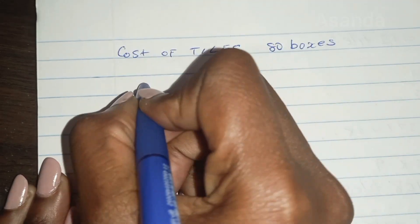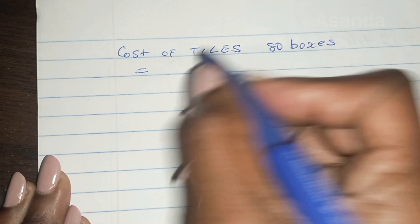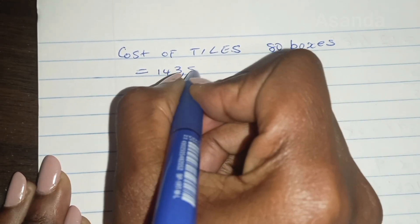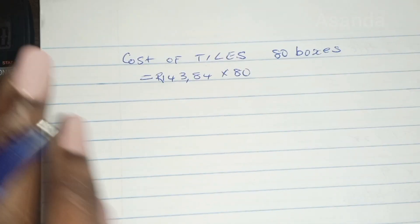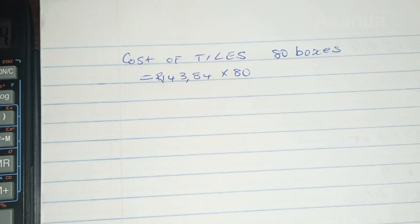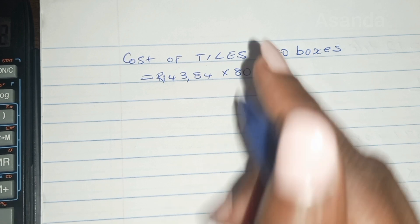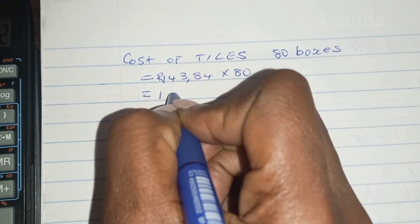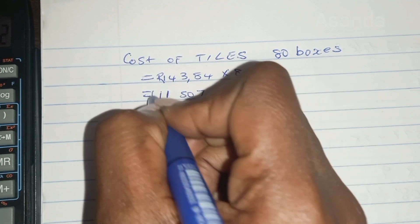So we're going to say now, cost there is equal to, and then we're going to say 143.84 rands for one box, multiplied by 80 boxes. And that's 143.84 multiplied by 80. And that is 11,507 rands and 20 cents.